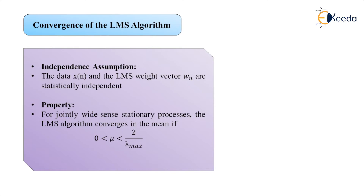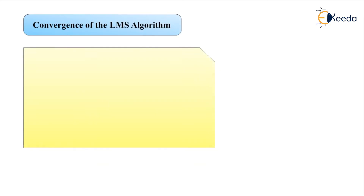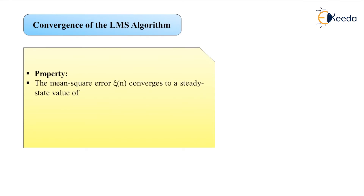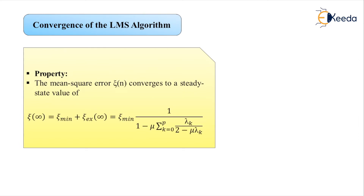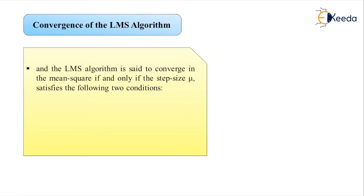The second property: the mean square error zeta(n) converges to a steady-state value zeta(infinity) = zeta_min + zeta_ex(infinity), where zeta_ex(infinity) = zeta_min * sum_{k=0}^{p} [mu * lambda_k / (2 - mu * lambda_k)]. The LMS algorithm converges in the mean square if and only if: (1) 0 < mu < 2/lambda_max, and (2) mu * sum_{k=0}^{p} [lambda_k / (2 - mu * lambda_k)] < 1.